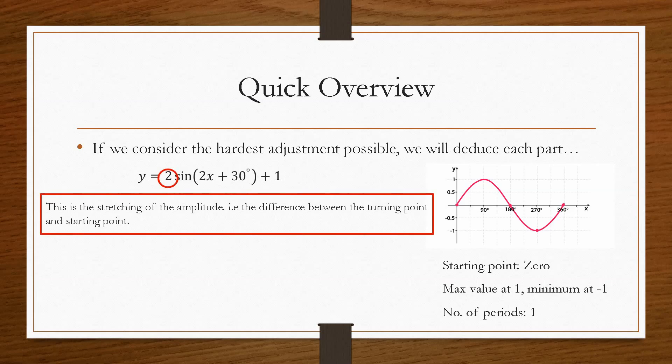So let's break this down. A 2 in front of the sine or the cos means that we stretch the amplitude. Now the amplitude being the height between the starting point and the turning point, and vice versa. So it basically will stretch it in the y direction. It will not have an effect on the starting position.